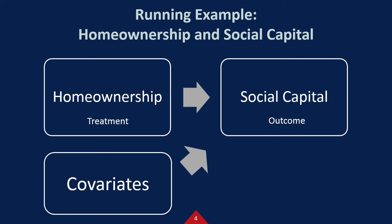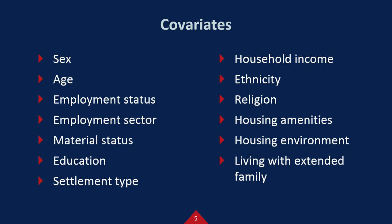Here, home ownership is binary, in which owners are 1 and non-owners are 0. These are a set of covariates I will use based on previous literature.